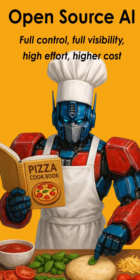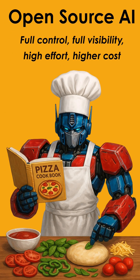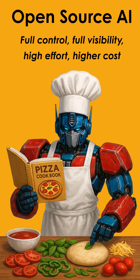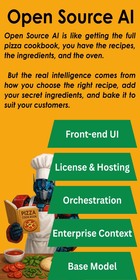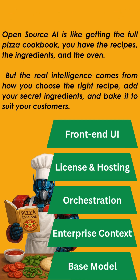Open source AI is like getting the entire pizza cookbook along with all the ingredients — you do everything yourself, from kneading the dough to baking the final pizza. You have full control and full visibility at every stage. At the base model level, this means you can actually shape how the AI learns — change its initial setup, feed it new examples, or even adjust the way it understands patterns so it works exactly the way you want. This gives you maximum flexibility, but it also means more effort, more skills needed, and often a higher cost.